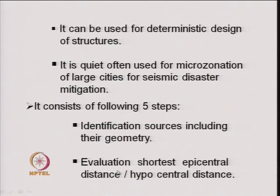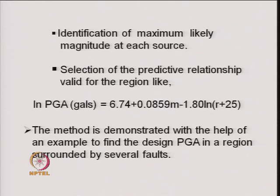The second step is evaluation of the shortest epicentral or hypocentral distance — for a line source or area source, one finds the shortest distance from that source to the site in question. The third step is identification of maximum likely magnitude at each source, generally obtained from past earthquake recorded data. From that data one can identify the maximum level of magnitude expected. Finally, one must select an appropriate predictive relationship valid for the region.